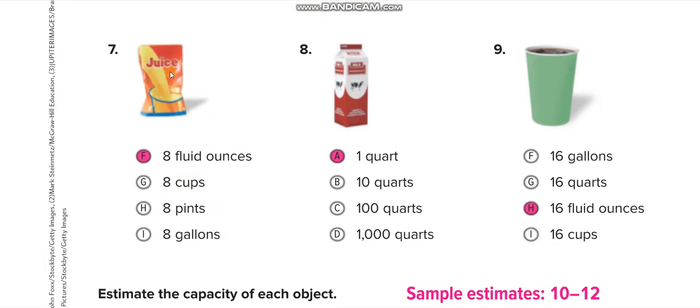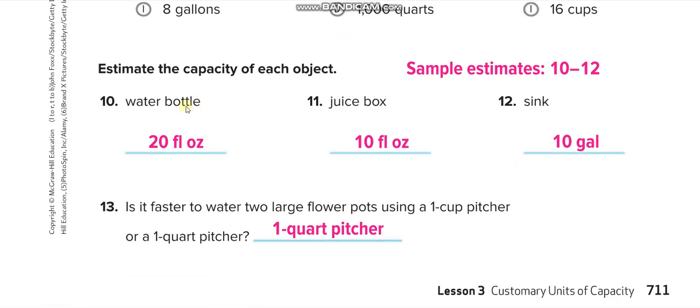This one, eight fluid ounces—a small packet of juice. One cup is also equal to eight fluid ounces, but we don't have that option. One quart is a big glass, equal to two cups. One cup equals eight fluid ounces, so two cups is 16 fluid ounces. For a water bottle, the reasonable estimate is 20 fluid ounces. Juice box: 10 fluid ounces. A sink, where your mom washes dishes in the kitchen—if you fill it with water, almost 10 gallons.